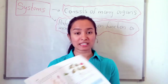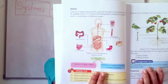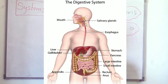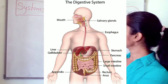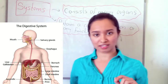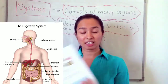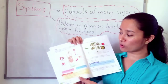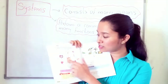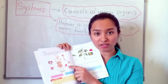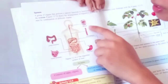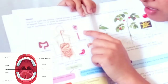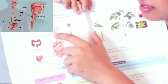Turn to page number 16. You can see the digestive system, which consists of many organs. The organs in the digestive system include: mouth, esophagus, liver, stomach, large intestine, and small intestine.